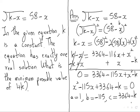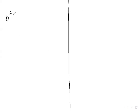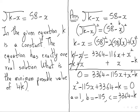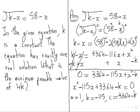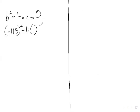Now because there is exactly one real solution, b square minus 4ac is going to be equal to zero. So instead of b we will write minus 115 square, then minus 4 into a, which is 1, into c—here it is 3364 minus k—is equal to zero.